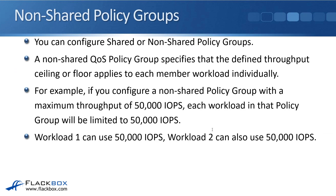There are shared and non-shared policy groups. A non-shared QoS policy group specifies that the defined throughput ceiling or floor applies to each member workload individually. For example, if you configure a non-shared policy group with a maximum throughput of 50,000 IOPS, each workload in that policy group will be limited to 50,000 IOPS — so workload 1 can use 50,000 IOPS and workload 2 can also use 50,000 IOPS independently.